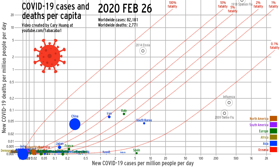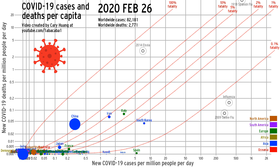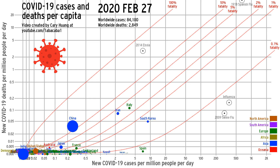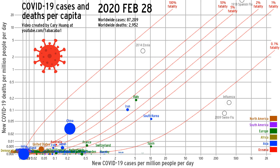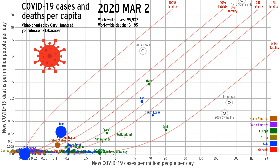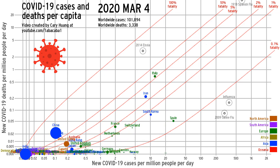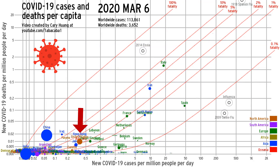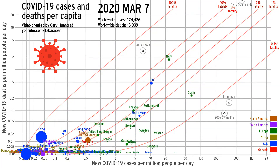By the end of February, China's reported number of cases and deaths were already falling below those of Italy, Iran, and South Korea, the last of which had a helpful head start on COVID-19 testing due to their preparation from their 2015 MERS outbreak. That brings me to a downside of this visualization — I'm still using Worldometer's reported case numbers, which can't possibly account for unknown cases due to lack of testing. At this point in early March, the United States probably already had thousands of cases, but we weren't aware of them, so neither is this visualization.